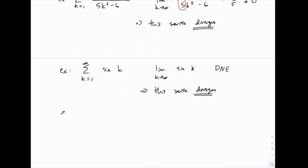And then for one more example, we could do something like 1 over k squared. And again, taking the limit as k goes to infinity of 1 over k squared, that does equal 0. And so be careful here, that doesn't mean that this series converges, that just means that this test is inconclusive.